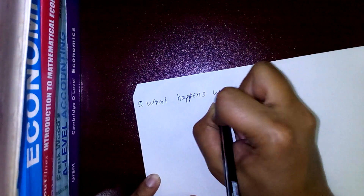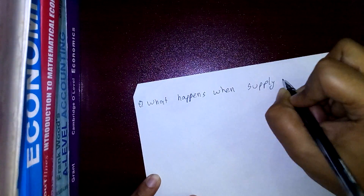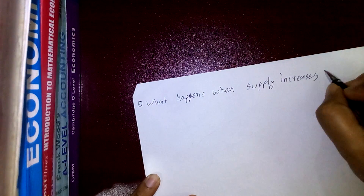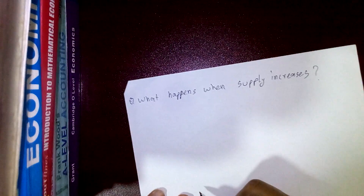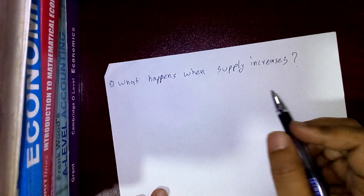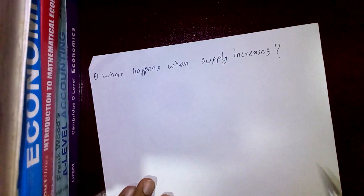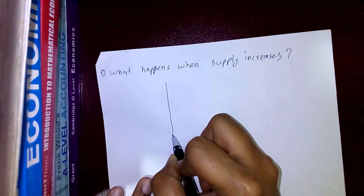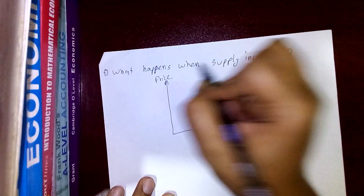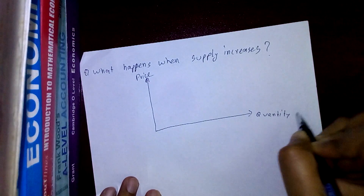The next important question is: what happens when supply changes — either rises or decreases? We've seen the effect of rising demand where price goes up, and falling demand where the demand curve shifts leftward and price goes down. Now the next question for this chapter is: what happens when supply increases?